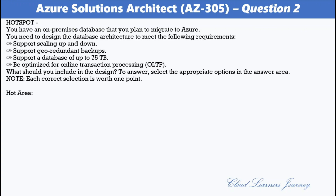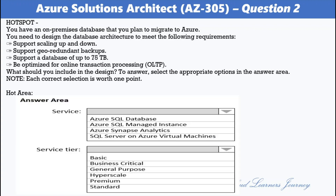Select the appropriate options in the answer area. For service, the options are: Azure SQL Database, Azure SQL Managed Instance, Azure Synapse Analytics, and SQL Server on Azure Virtual Machines. For service tier, the options are: Basic, Business Critical, General Purpose, Hyperscale, Premium, and Standard.